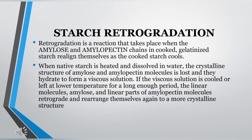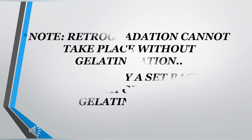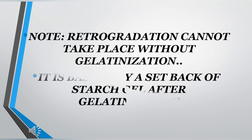If the viscous solution is cooled or left at a lower temperature for a long enough period, the linear molecules — amylose and the linear parts of amylopectin molecules — retrograde and rearrange themselves again to a more crystalline structure. This process is known as retrogradation. Please note: retrogradation cannot take place without gelatinization.